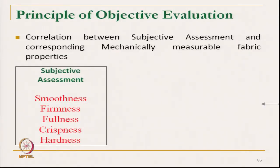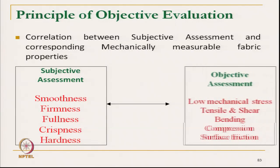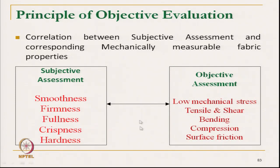The correlation between subjective and objective assessments means that any subjective assessment can be correlated by measuring objective fabric characteristics — mainly low stress mechanical characteristics: tensile, shear, bending, compression, and fabric surface characteristics. All of these can be correlated with tactile responses like smoothness, fullness, crispness, and hardness, which ultimately give us tactile sensations.